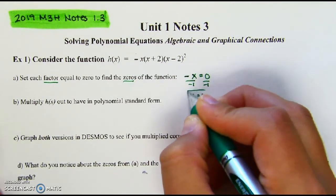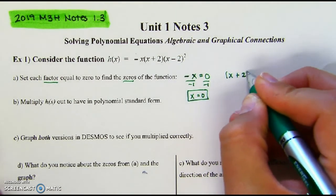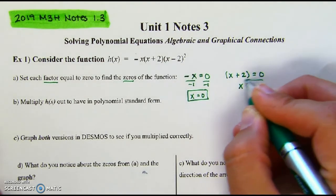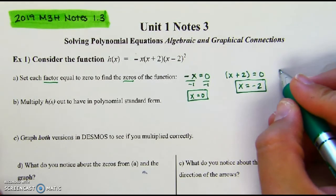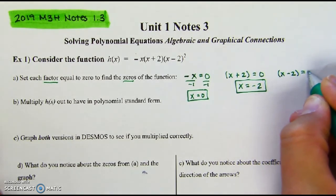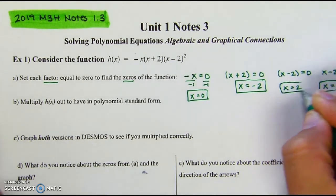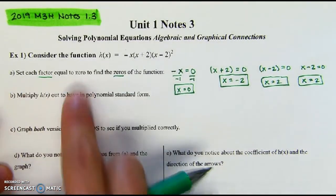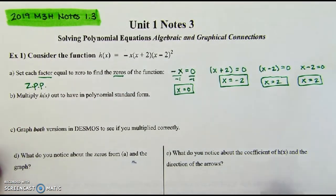Zero divided by anything is zero, so x = 0. The next factor is x + 2; set it equal to zero and x = −2. The third factor is x − 2, which appears twice, giving x = 2 both times. Setting each factor equal to zero is called the Zero Product Property — ZPP.